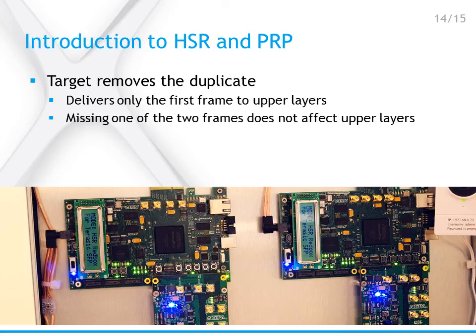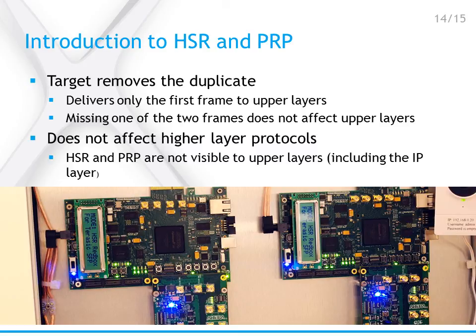In both HSR and PRP, when the two packets arrive, the destination node removes the duplicate. It only delivers the first frame to the upper layers and discards the second. This means that missing the other frame does not affect upper layers — they still get all the needed data. HSR and PRP are not visible to upper layers and do not affect them in any way, including the IP layer, so there is no need to make changes to the higher layers when implementing HSR or PRP.